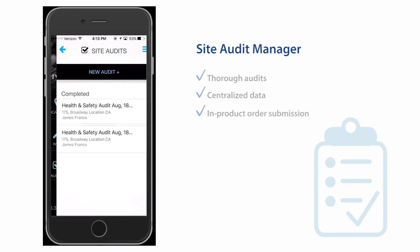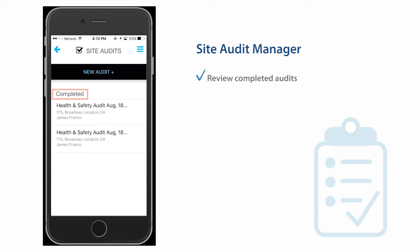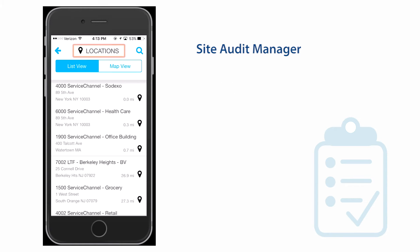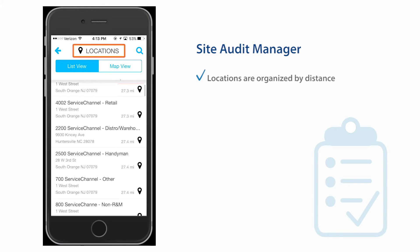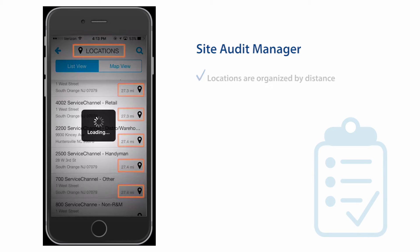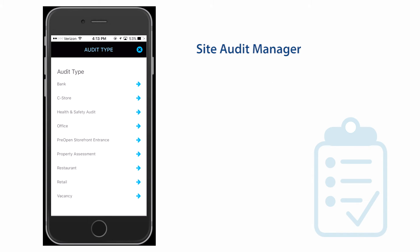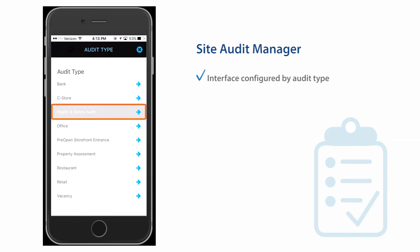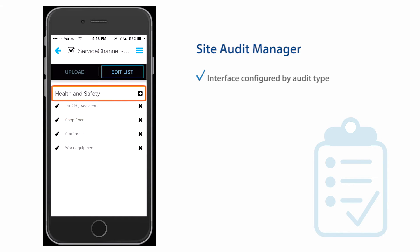From within the app, easily review completed audits or begin new audits. A new audit begins by selecting a location from the list, conveniently organized by distance from your current GPS location. Choosing an audit type configures the interface for the specific audit being performed.